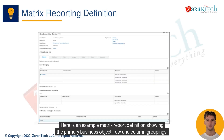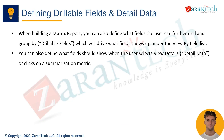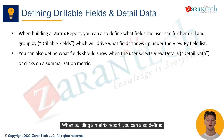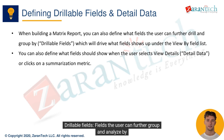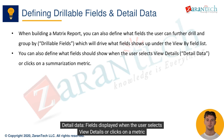Here is an example matrix report definition showing the primary business object, row and column groupings, and summarization. When building a matrix report, you can also define drillable fields — fields the user can further group and analyze by — and detailed data fields, which are displayed when the user selects view details or clicks on a metric.